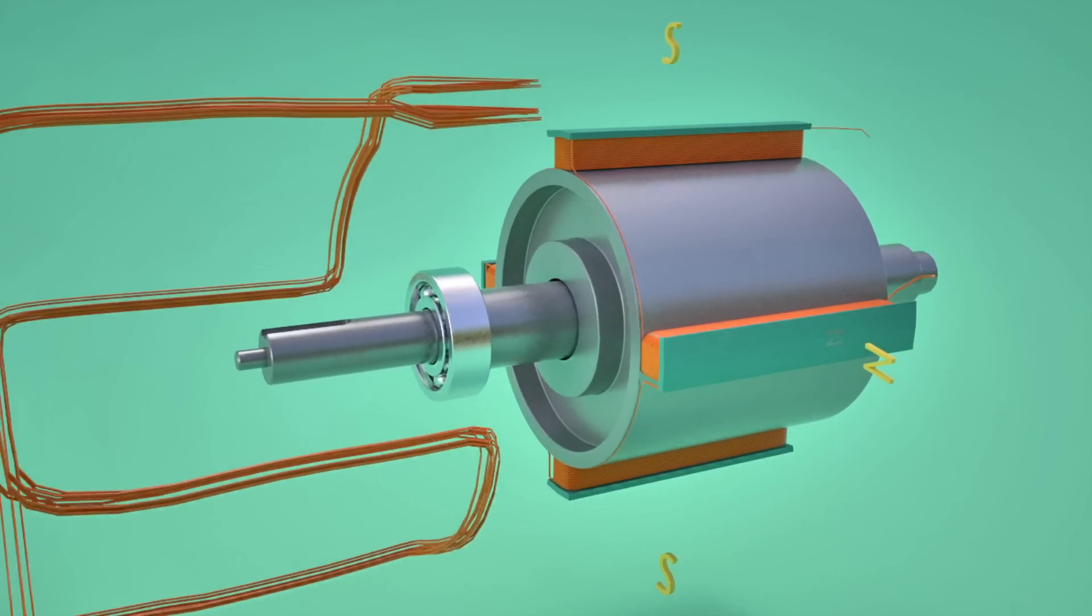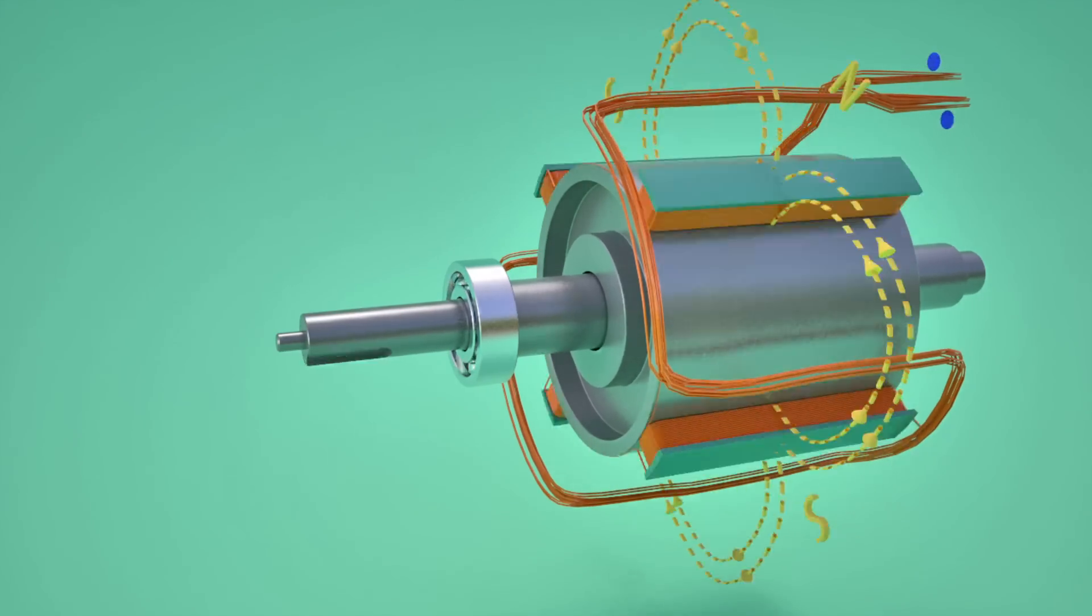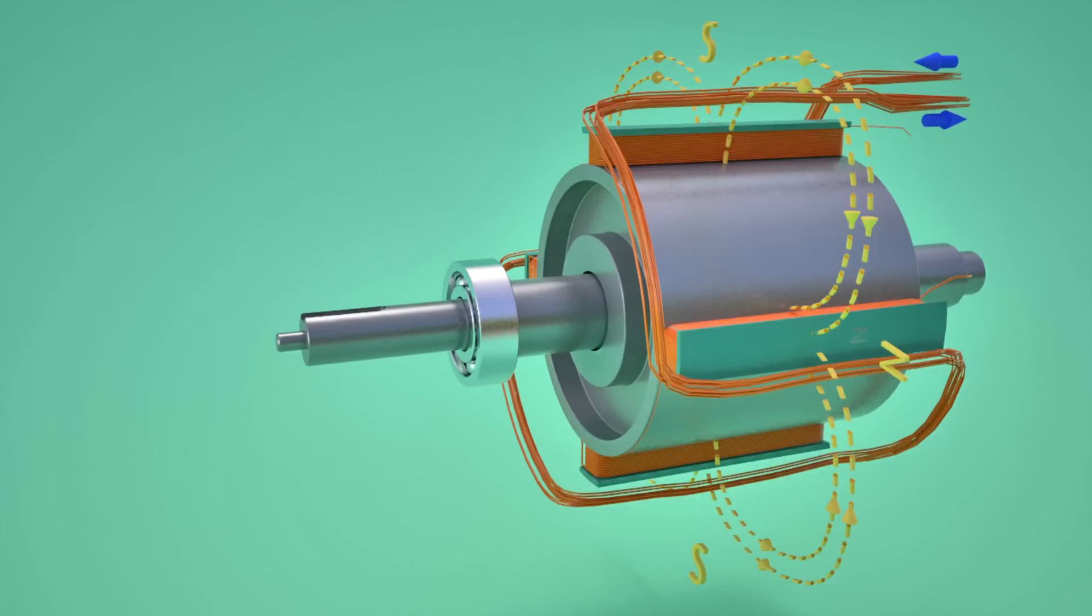Such revolving magnetic flux now intersects the armature coils, which is fitted around the rotor. This will generate an alternating electromagnetic force across the winding.